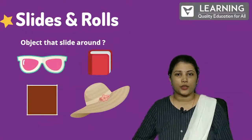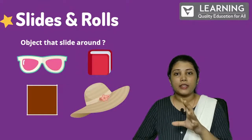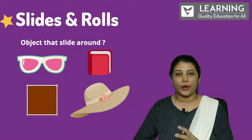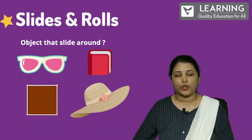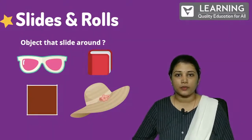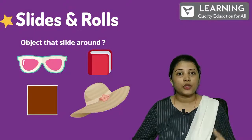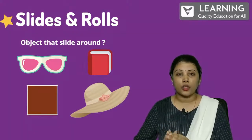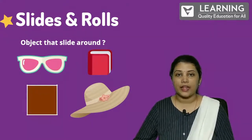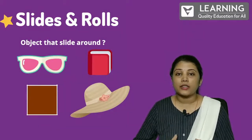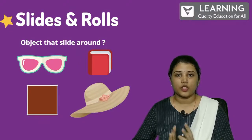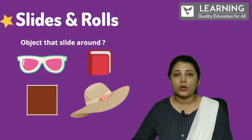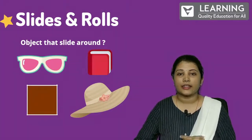We see four objects over there that can simply slide: the book, the box, the goggles, and the cap or hat. Now, you can't play with a book — you can't throw it, it will not roll down. It will simply slide. So if you also try to roll these things, they will simply slide. That's the reason why the book is having a plain surface. Goggles are also having a plain surface — they will not roll down, they will simply slide.